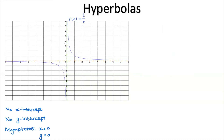Now that we've seen the basic f(x) = 1/x, let's talk about the standard form of the hyperbola. The standard form is y = a over x plus q. That a and q should bring up some parabola vibes. Let's see the impact that a will have on the graph.